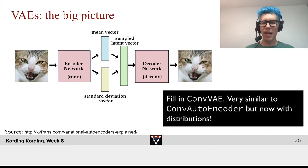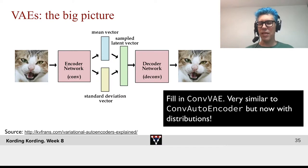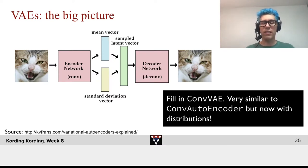Fill in the conv-VAE, and it's very similar to the conv-autoencoder, but now with real distributions.